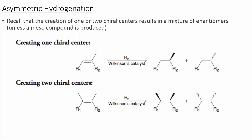If we start with a molecule that has the opportunity to create a stereocenter using the Wilkinson's catalyst, we can obtain a mixture of enantiomers. If we start with a molecule that has two potential chiral centers formed, then we would create a mixture of two enantiomers that have two chiral centers.